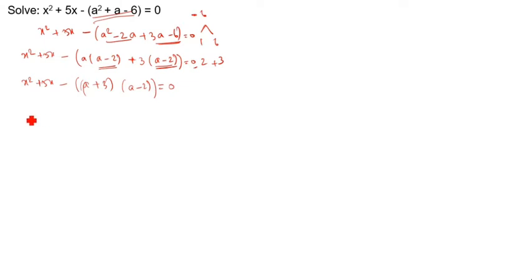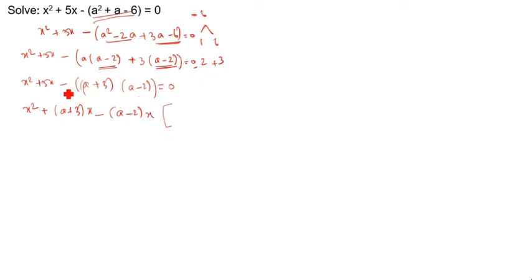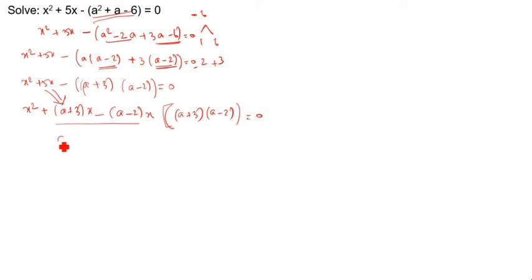After that, a plus 3 and a minus 2 come. In the same way, for the full equation: x squared plus (a plus 3)x minus (a minus 2)x, bracket of (a plus 3)(a minus 2) equals 0. Multiplying: ax plus 3x minus ax minus minus plus 2x. The minus ax and plus ax cancel, and 3x plus 2x gives 5x — verified.